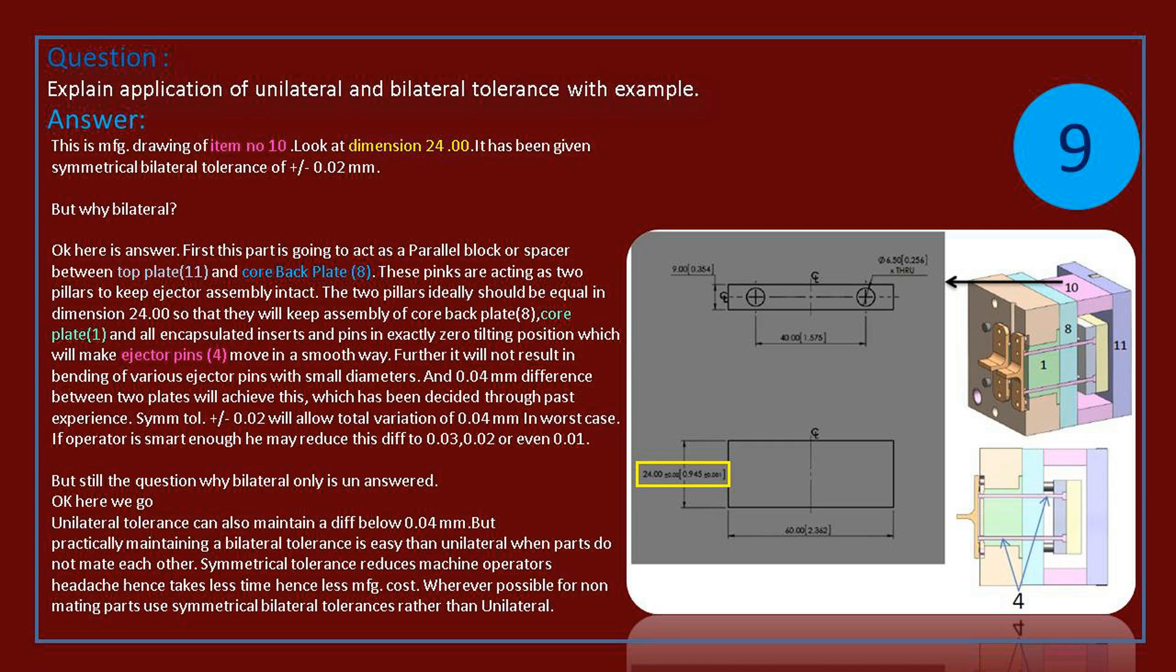which has been decided through past experience. Symmetrical tolerance of 0.02 will allow total variation of 0.04 mm in worst case. If operator is smart enough, he may reduce this difference to 0.03, or 0.02, or even 0.01.